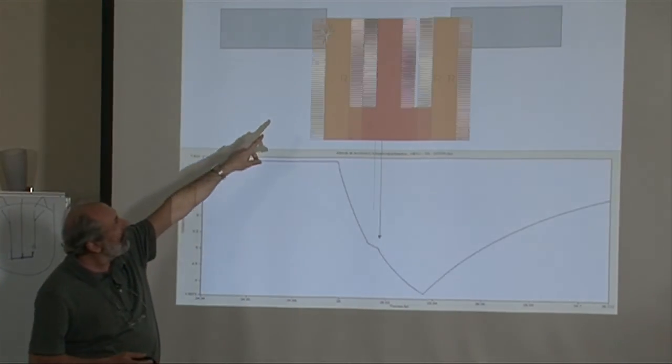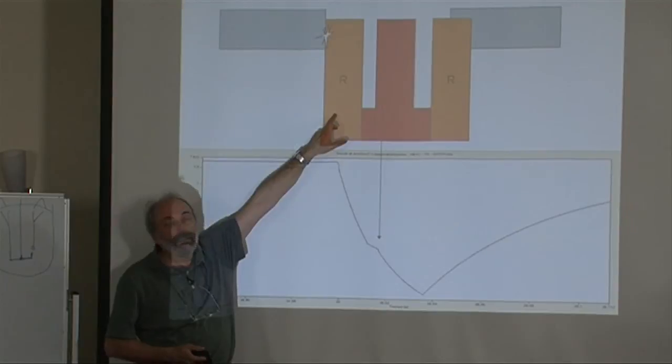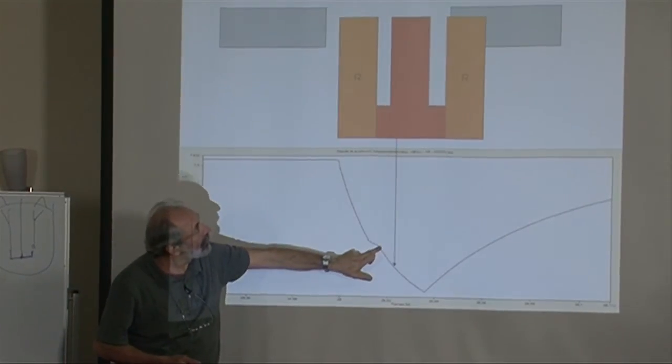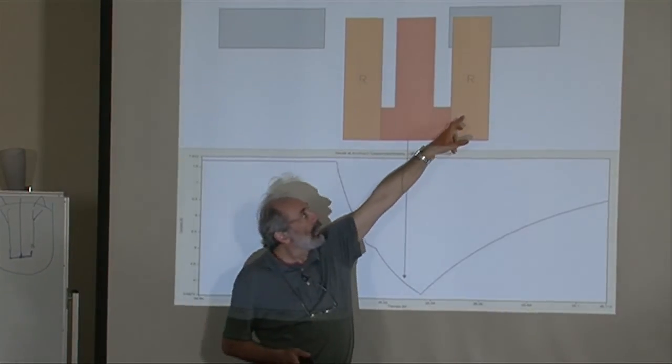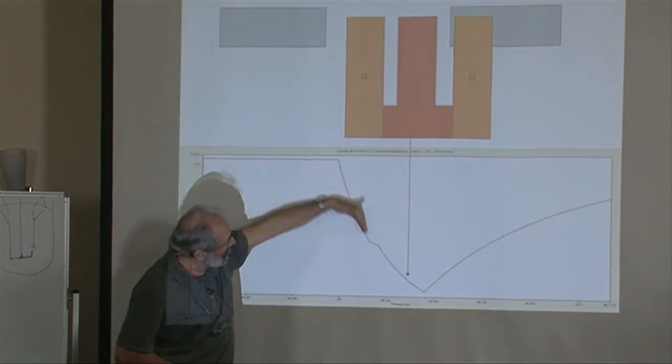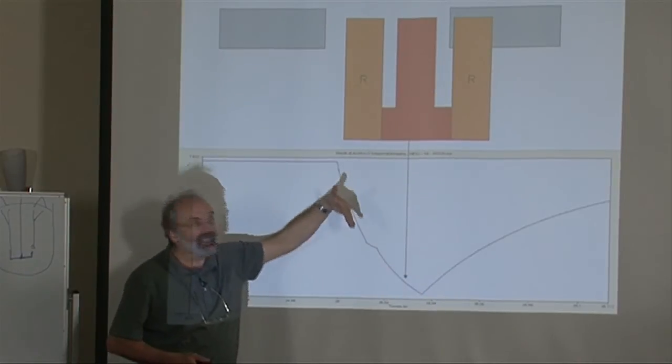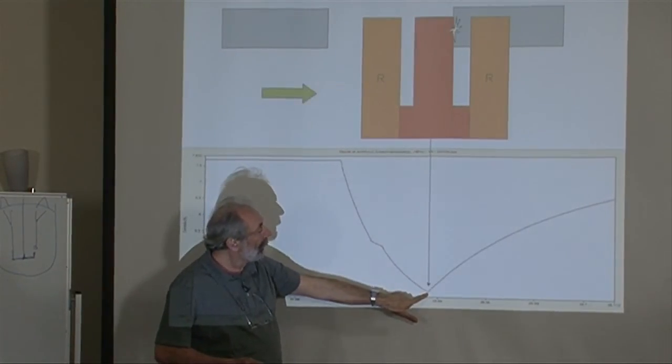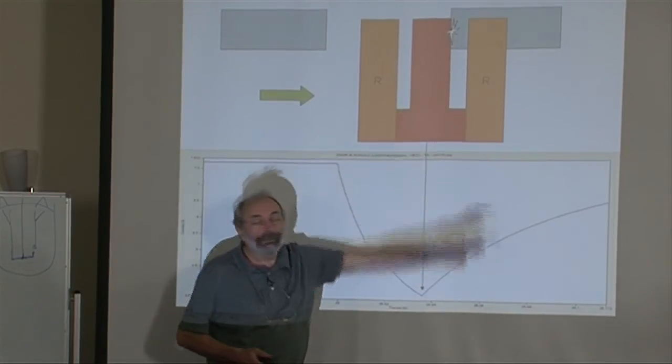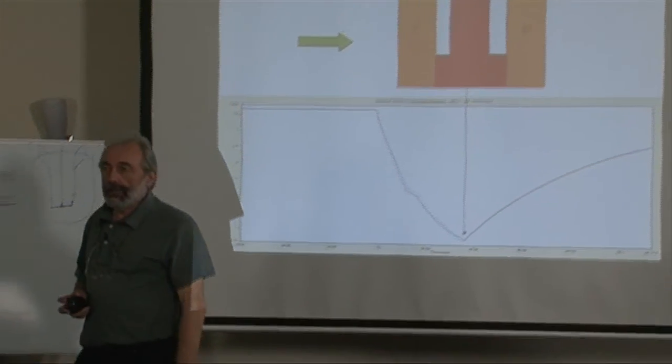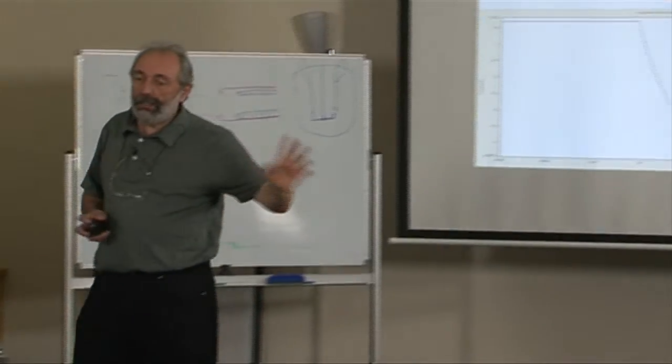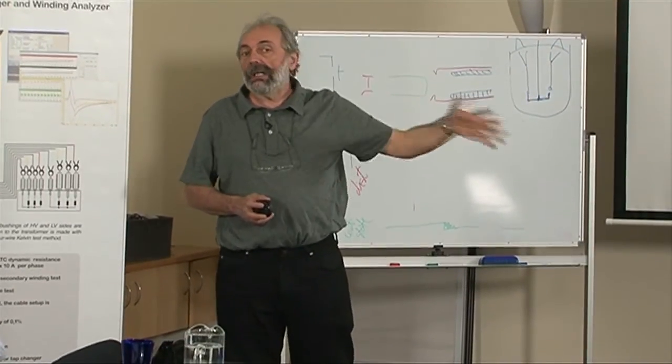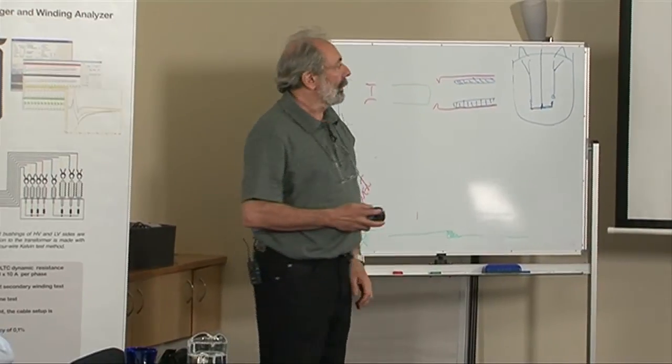When it separates it continues going through only one resistor. So this is the same slope, until the main contact makes with the next position. Now that it made, the current goes this exponential inductance type increase.